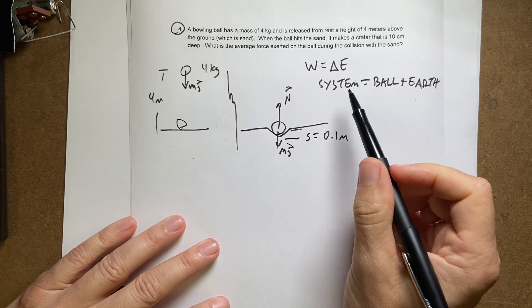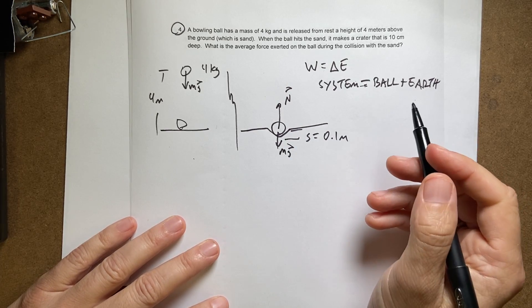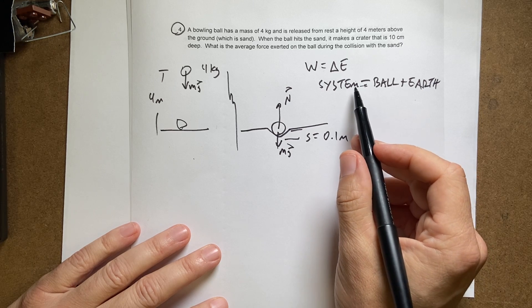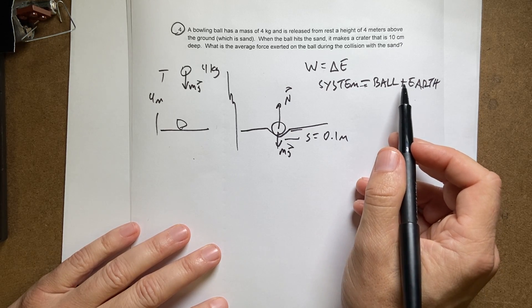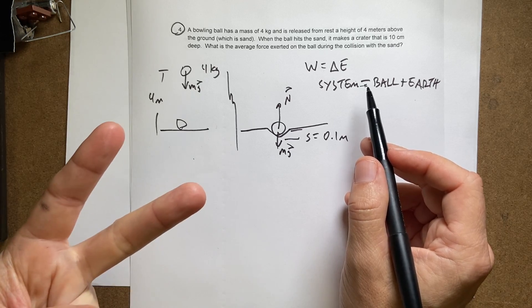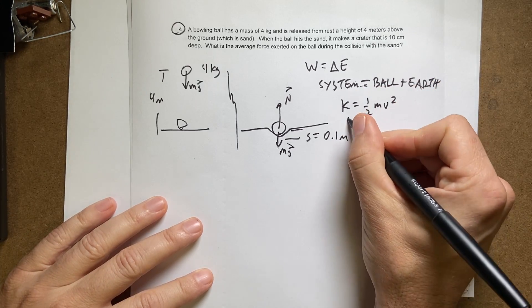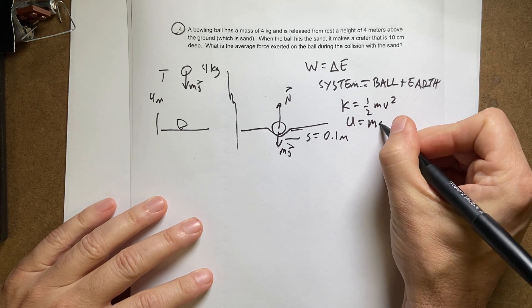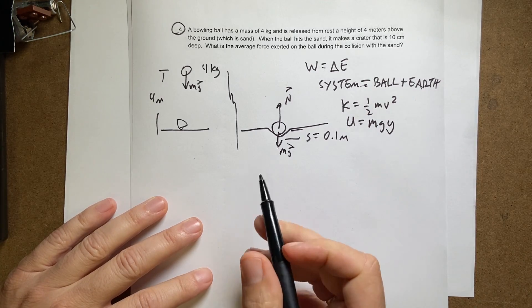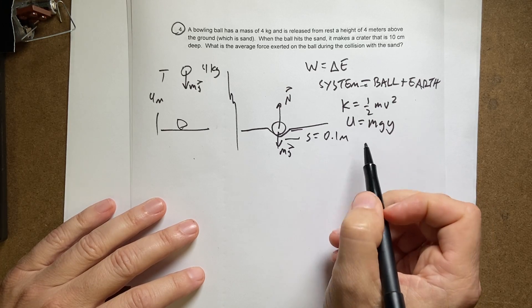If you use the work energy principle, you have to say what your system is, because that tells you what energies you have and what does work. So in this case, if I have the ball and the earth as a system, I can have kinetic energy of the ball and I can have gravitational potential energy. Kinetic energy is 1/2 mv squared, and the gravitational potential energy is mgy. Of course, that doesn't matter. What matters is the change. But that's where I'm starting from.